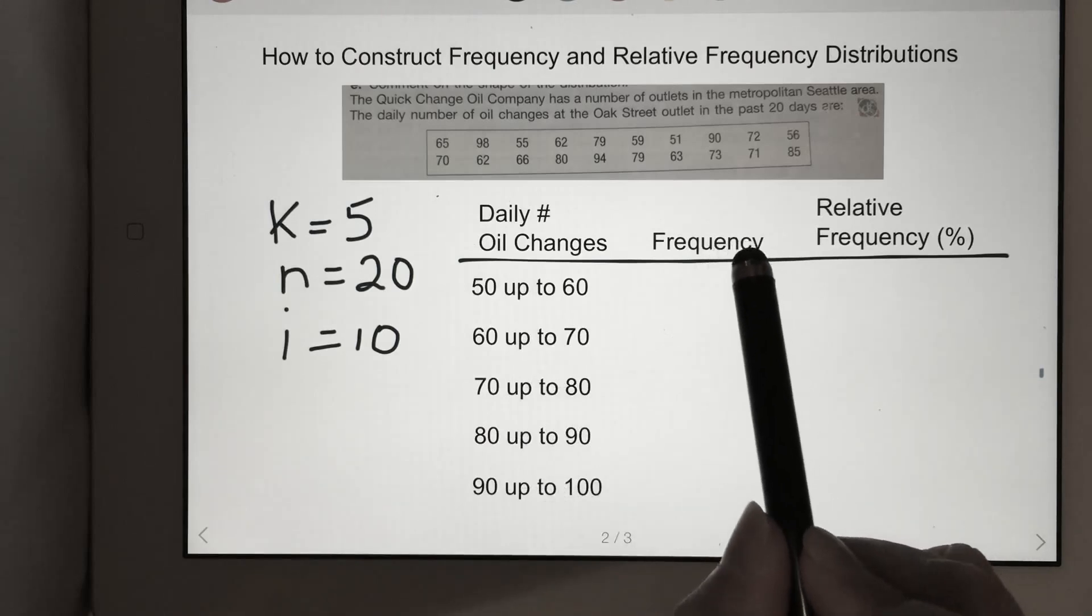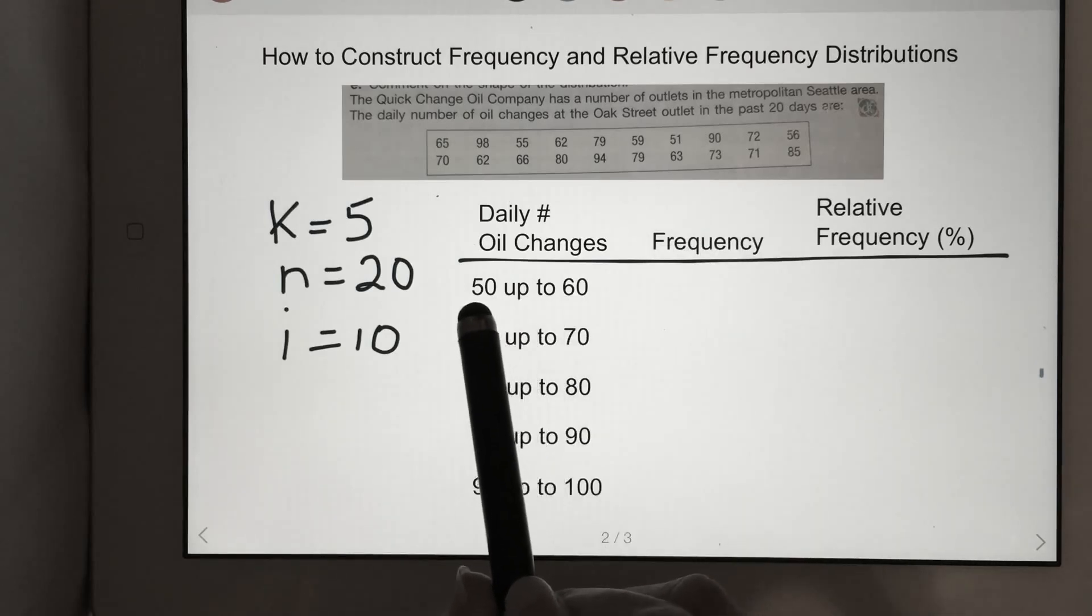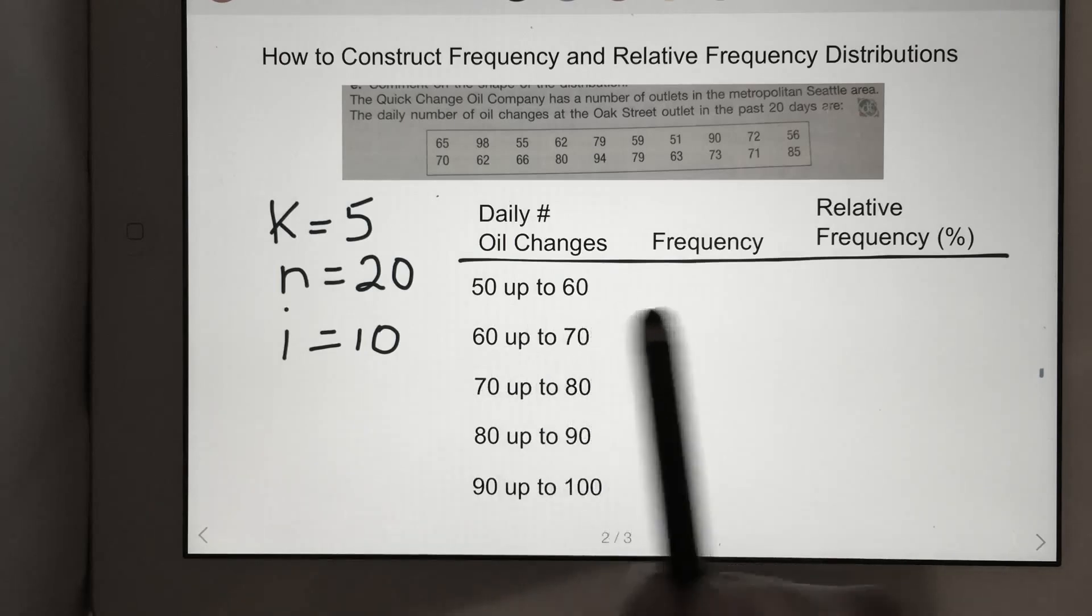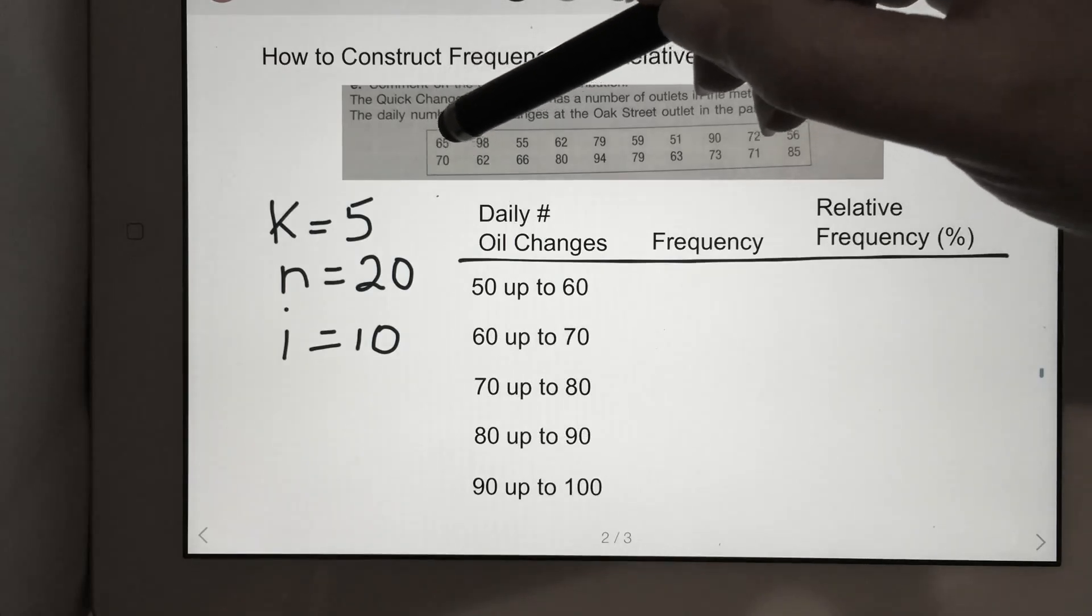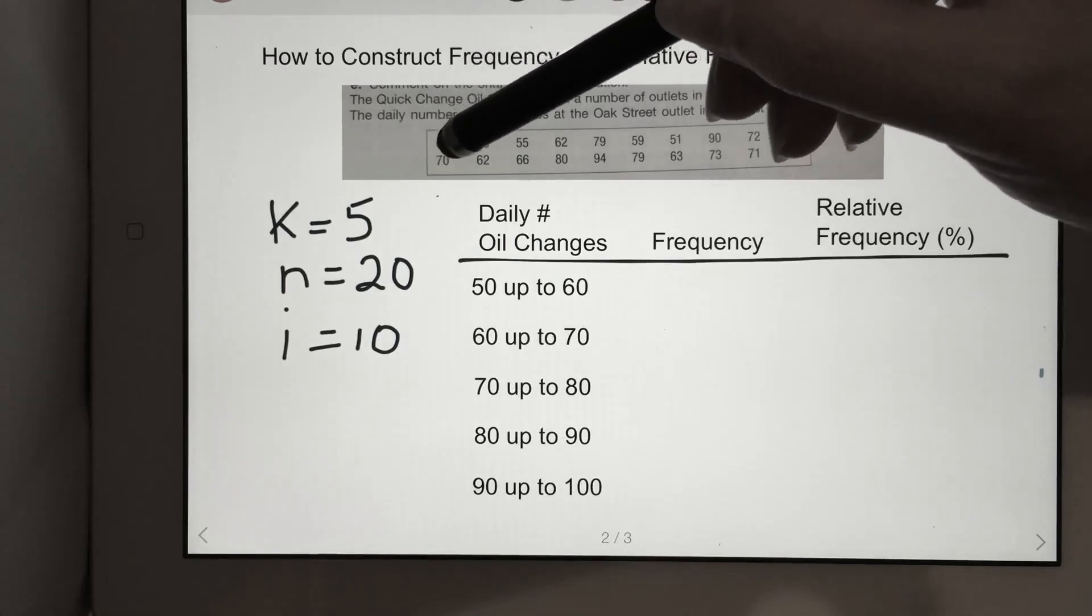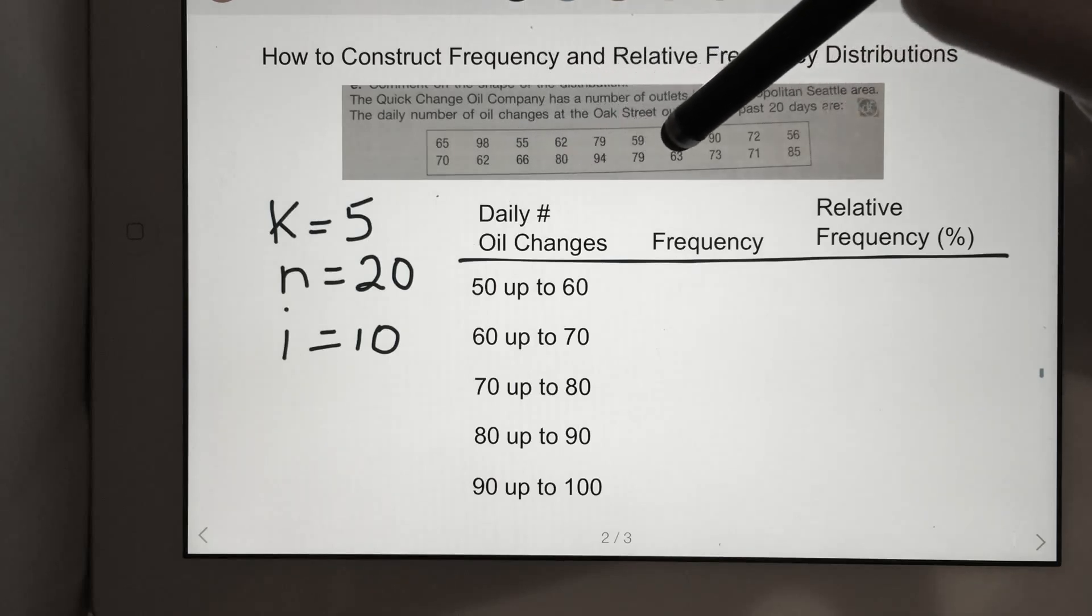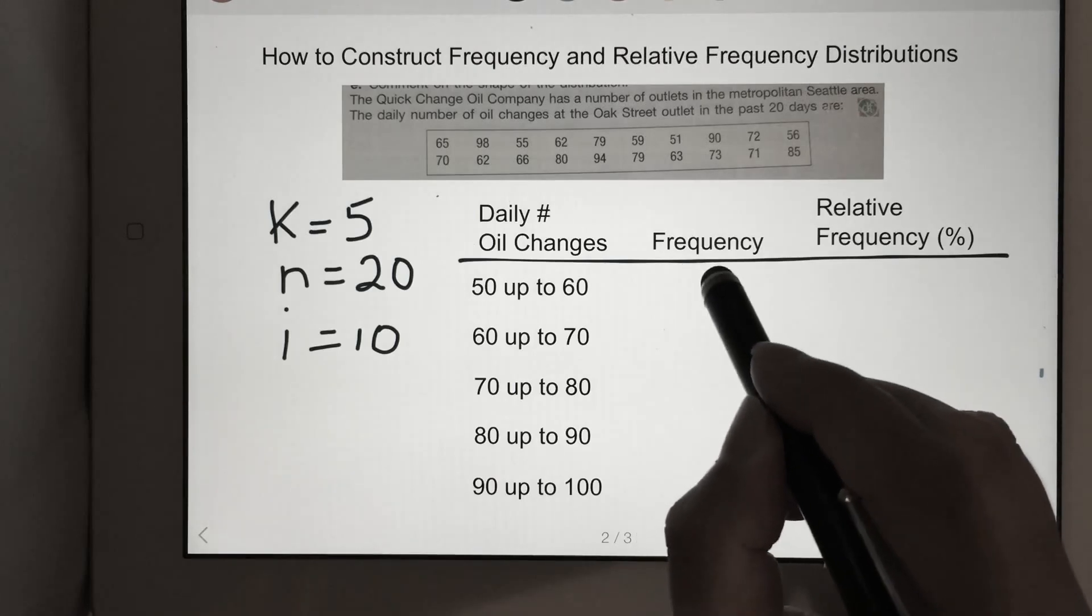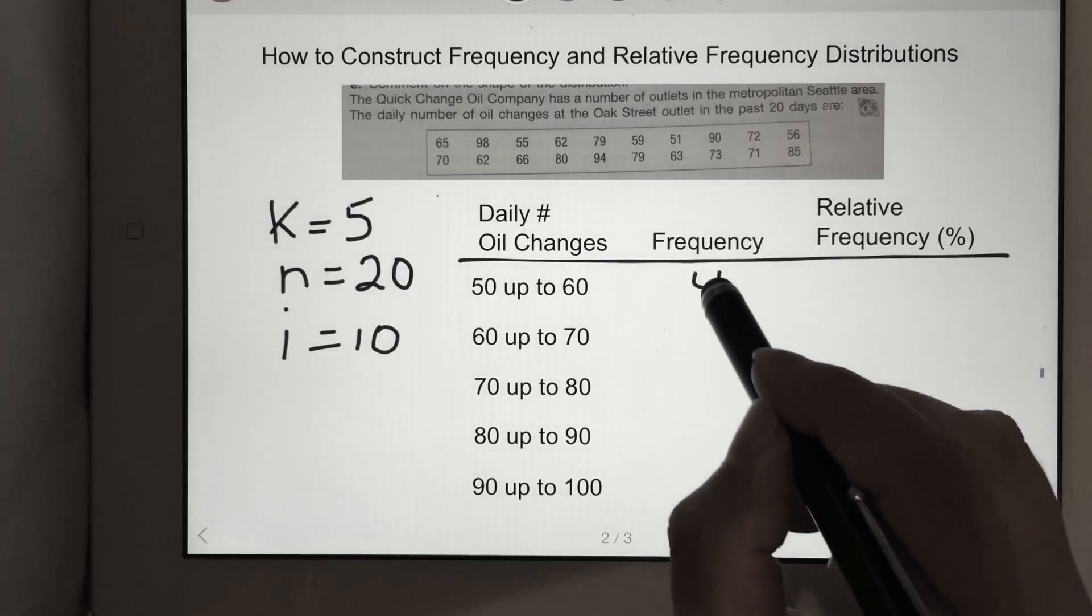So now we need to figure out our frequency of each of these. Now 50 up to 60, that does not include 60. So we're going to go back and look for any numbers that are between 50 up to 60. 1, 2, 3, 4. So we have 4 here.